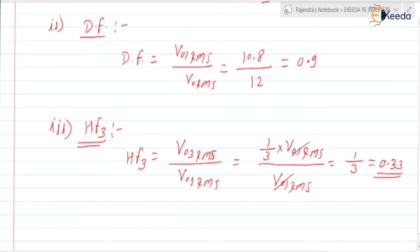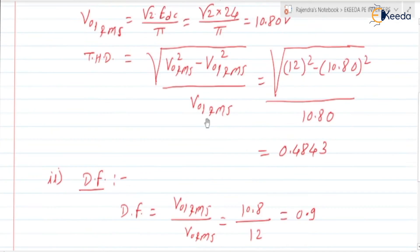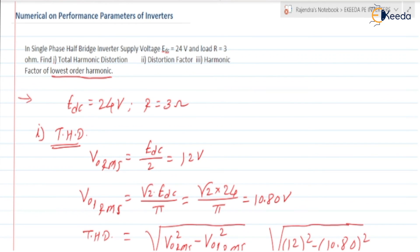Harmonic factor of third harmonic. Lowest harmonic, lowest order harmonic is nothing but third harmonic in this case. So is this clear? This is about the numerical related to performance parameters of inverters. In the next video, we are going to discuss the voltage control in inverters. Thank you.